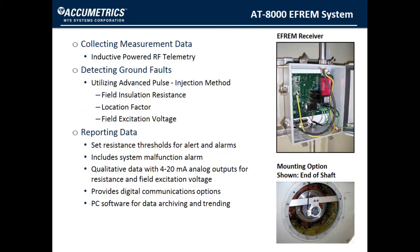Two different alarm outputs allow users to set custom resistance thresholds. Also included is a malfunction alarm. There are two 4 to 20 milliamp analog outputs for reporting fault resistance and field excitation voltage, and included software allows for historical archiving of data so that trends can be examined.